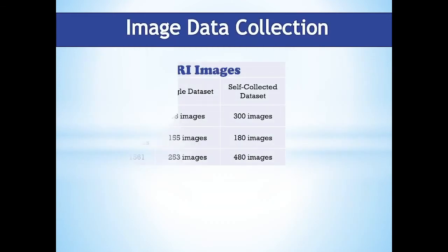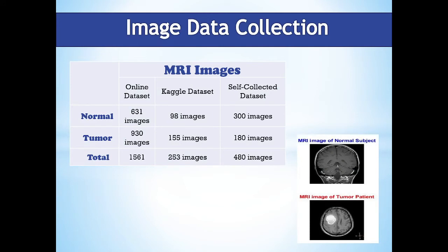In our research, we used three different datasets: one from the internet, one from Kaggle, and one from different radiology departments of local Pakistani hospitals. The format of images obtained from the internet is PNG and JPG, while images from hospitals are in DICOM format. In total, we had 109 MRI images of normal or healthy brains and 165 MRI images of brain tumors. The figure shows the MRI image of a normal subject and of a tumor patient.